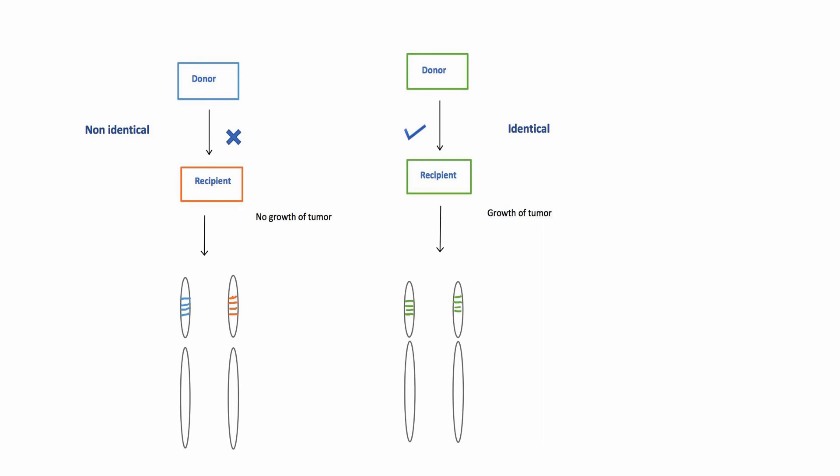Later on, it was found that if a set of genes is different in the recipient from the donor, it results in rejection of tumor, while if this set of genes is similar, it resulted in growth of tumor. This set of genes was named major histocompatibility complex or MHC.